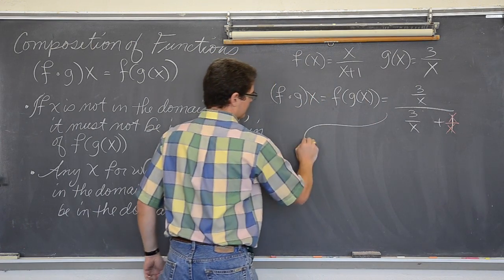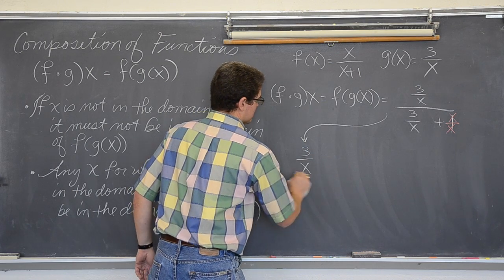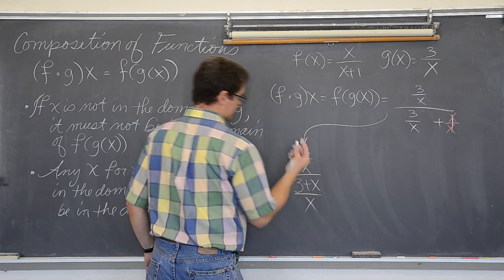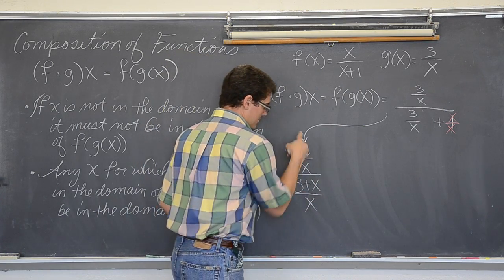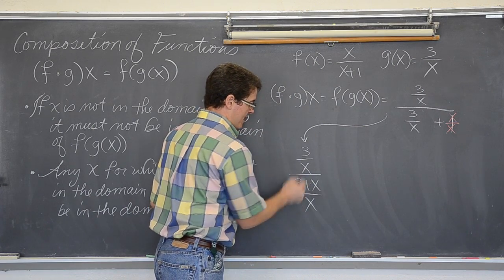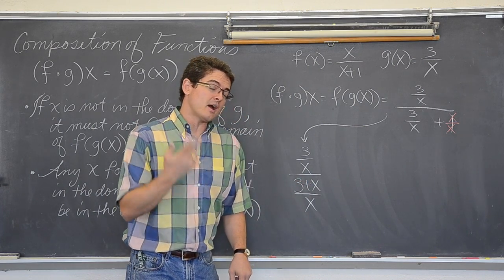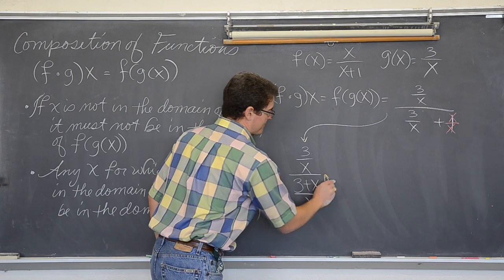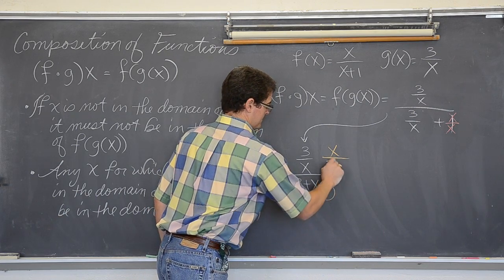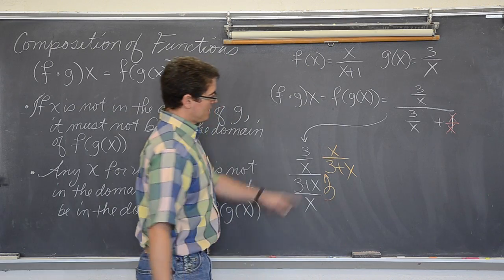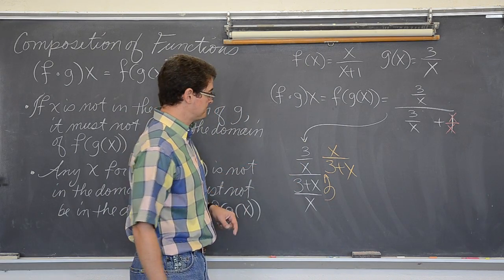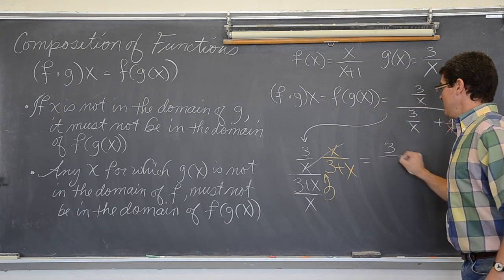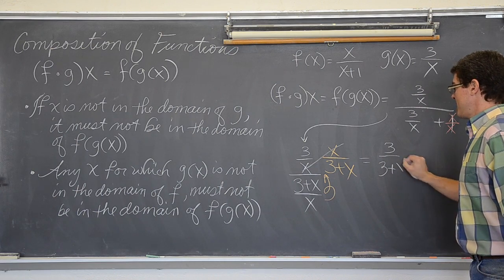So, voila! 3 over x over 3 plus x over x again. And, a fraction divided by a fraction. You can't really divide fractions. You have to multiply by the reciprocal. So, you do your little pigtail and move that bottom up. And look! The x is going to cancel out. So, our final answer is going to be 3 over 3 plus x.